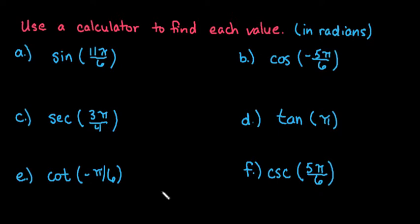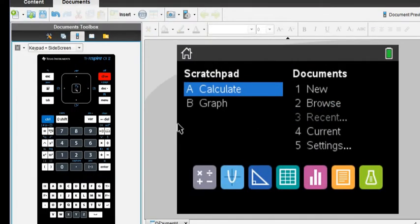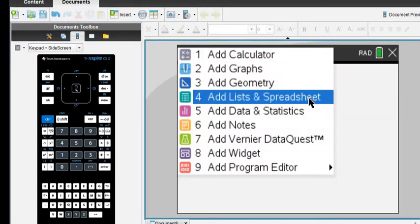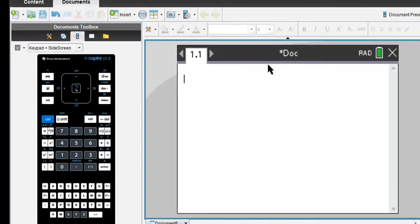You're going to need your calculator. I have all of them written down on my paper, so I'm just going to plug them in and then we'll go back and write down all of the answers. I'm going to open a new document, option 1, and add a calculator screen.